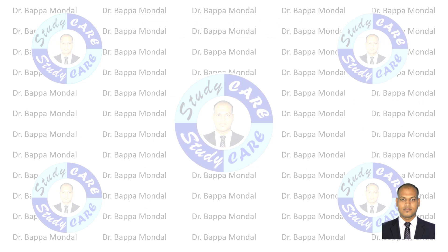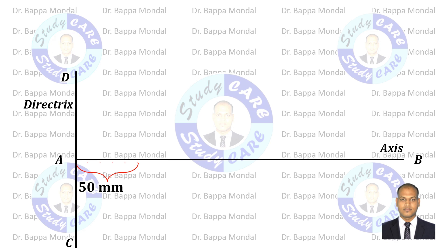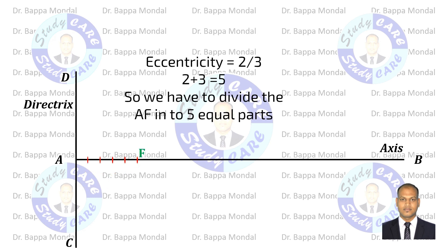First, draw a line AB to represent the x-axis. Then draw a perpendicular line to AB — that is the directrix. As per the question given, take a point F at 50 millimeters away from the directrix. That is the focus.